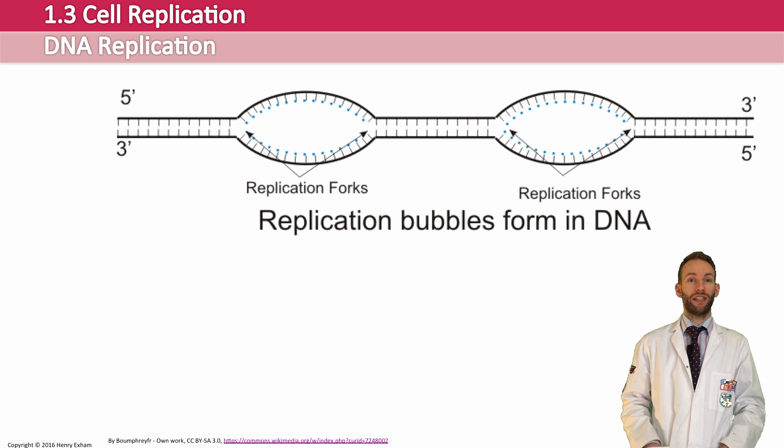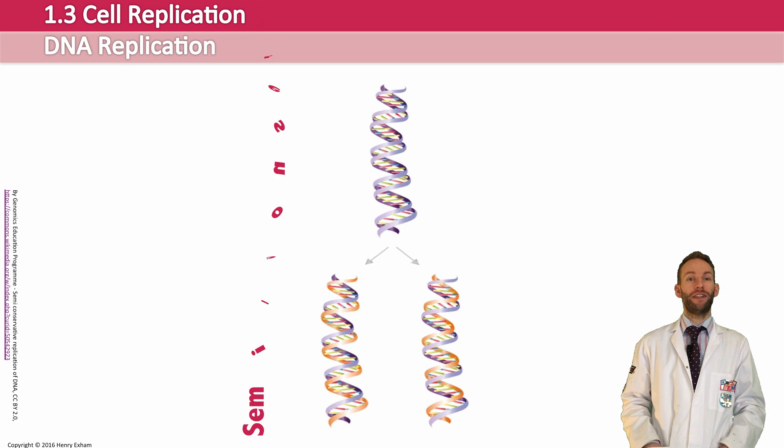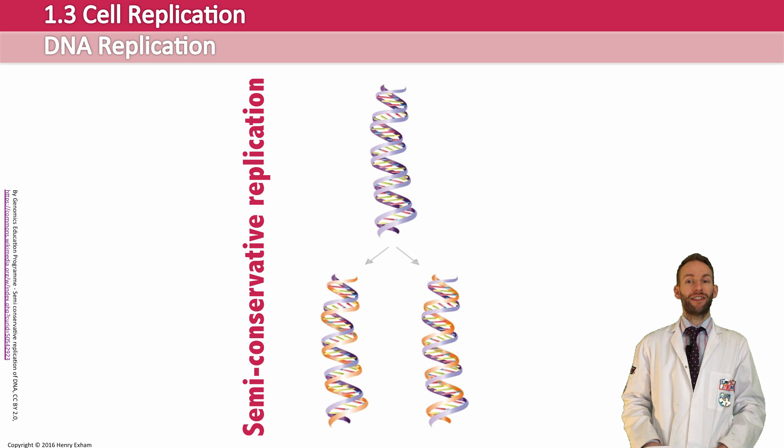The two new strands wind up, once they're done, to form this double helix shape. And this is what we call semi-conservative replication. What we've done here is we started with a molecule of DNA, and there is actually one of the original strands of that DNA in each of the two new molecules of DNA. This is why it's called semi-conservative, because half of the DNA is conserved into each of the new molecules, semi-conservative replication.